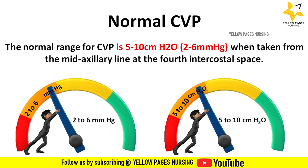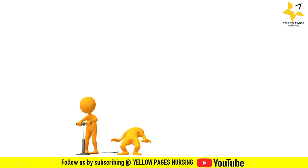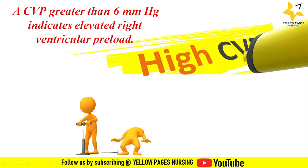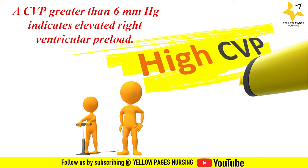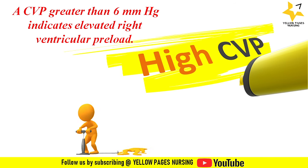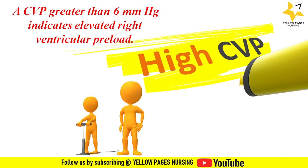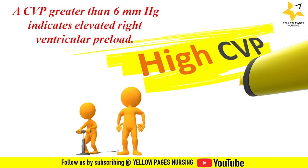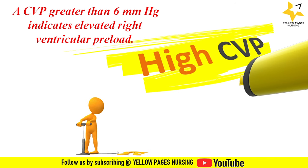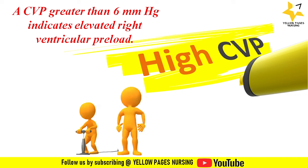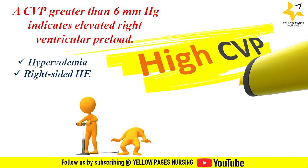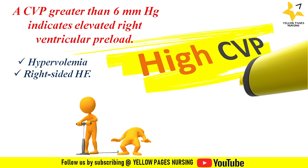A CVP greater than 6 mmHg indicates elevated right ventricular preload. There are many problems that cause an elevated central venous pressure, such as cardiac tamponade, constrictive pericarditis, pulmonary hypertension, high stroke volume, and most commonly hypervolemia and right-sided heart failure. Remember, this should be correlated with the clinical features.